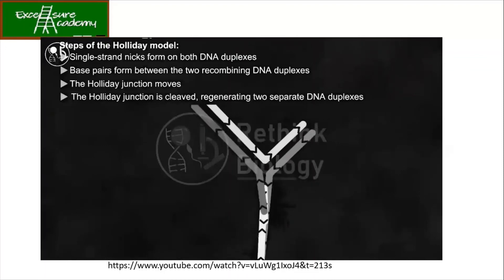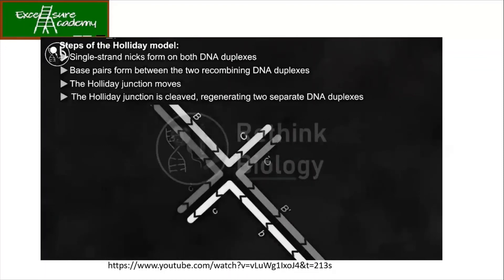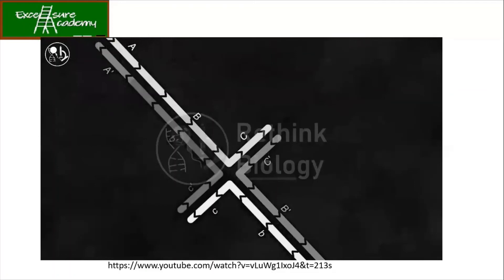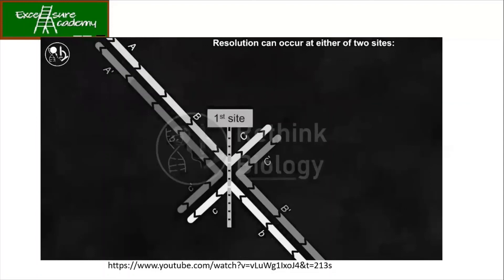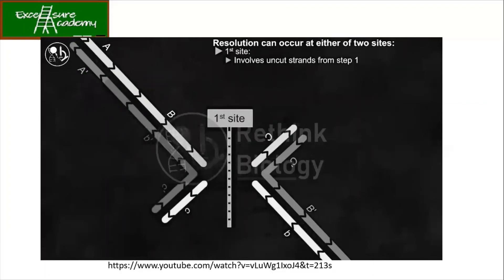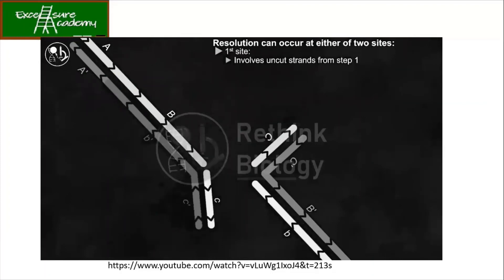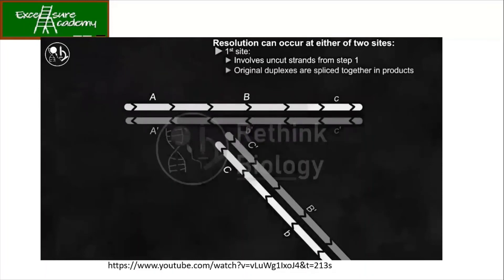For better understanding, the Holliday structure is rotated to give a planar structure without crossing strands. Resolution has two possible sides, each giving a different outcome. The first cut can be the pair of strands that were uncut during the first step of recombination — they can be identified as having a single color. As a result, the original DNA duplexes are spliced together in the resulting duplexes, so they are named splice recombination products.